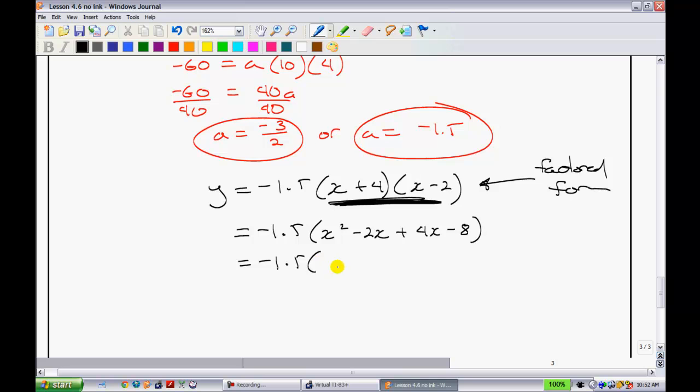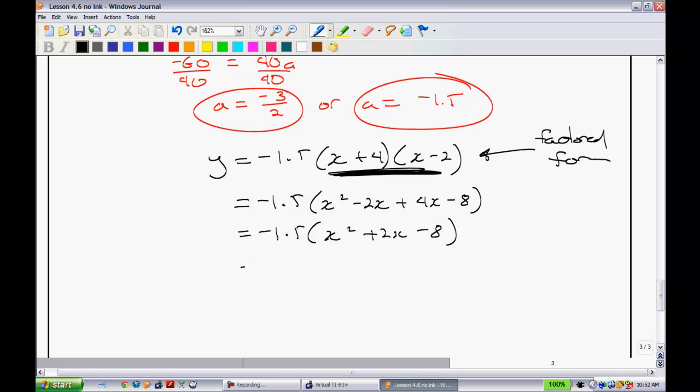Okay, the next thing I'll do is, I'll just gather my like terms in here quickly. This gives me a plus 2x this time, minus 8. Now, multiplying everything by the -1.5, that gives me -1.5x squared. -1.5 times 2 is the same thing as -3x. -1.5 times the 8 is the same thing as a positive 12. That would be written in general form.